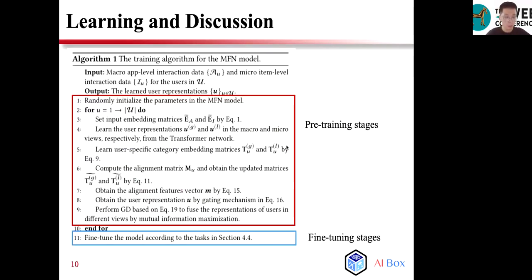In this part, we present the model learning and model discussion. The algorithm represents the training algorithm for our model. The entire procedure of our approach consists of two important stages: pre-training and fine-tuning. At the pre-training stage, we optimize the parameters based on MIM loss, which helps to enhance the user representation by fusing the information in macro and micro views. At the fine-tuning stage, we utilize the learned parameters from the pre-training stage to initialize our model, and then fine-tune the model for a specific task.